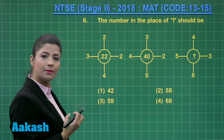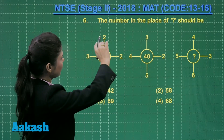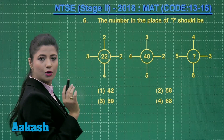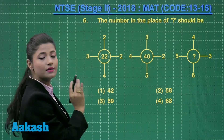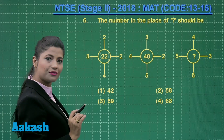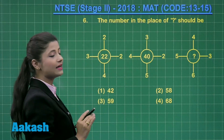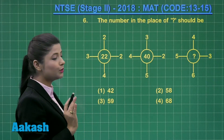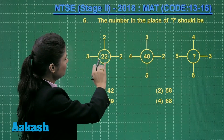Let us try to decode the pattern here. Square of 4 is 16, square of 3 is 9, square of 2 is 4, and square of 2 is again 4. When you add up the squares of 4, 3, 2 and 2, you get the sum total as 33. And from that, when you subtract the sum of these numbers — 4, 3, 2 and 2, that is 11 — you obtain 33 minus 11 equal to 22, which clearly gives you the number at the circle.